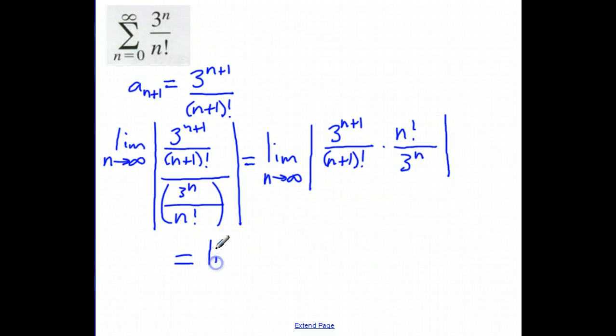That's going to equal the limit as n approaches infinity. Now, 3 raised to the n plus 1 power divided by 3 raised to the n power. I'm dividing, so that means I'm going to subtract exponents, and that leaves me with 3 to the first power.